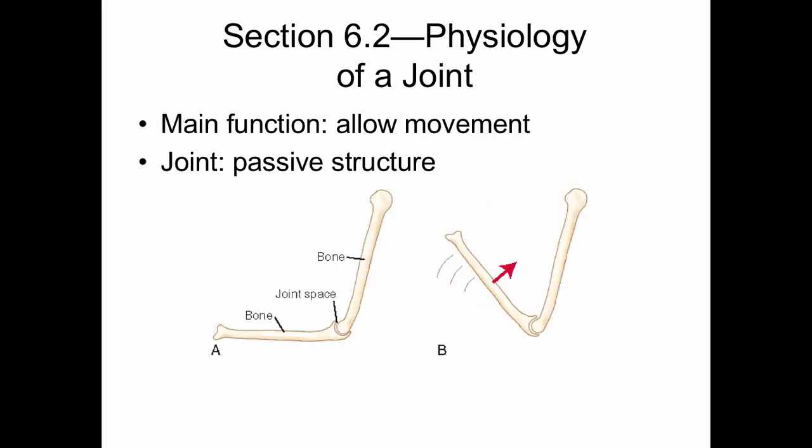The main function of a joint is to allow movement — and the word 'allow' must be emphasized here. Joints do not create movement; that's the job of muscles. Joints are passive structures, and ligaments and joint capsules limit movement.